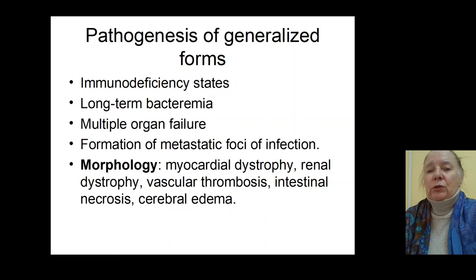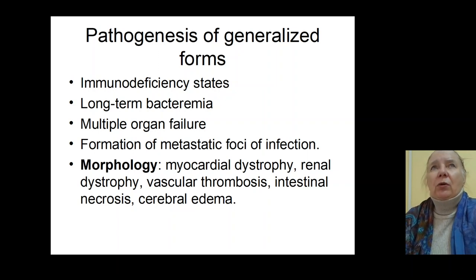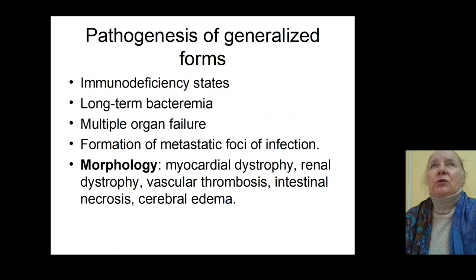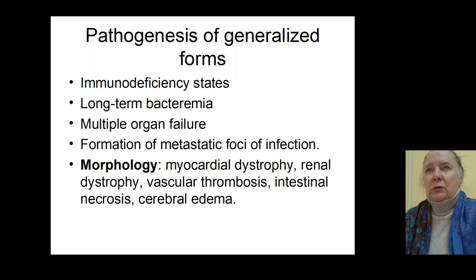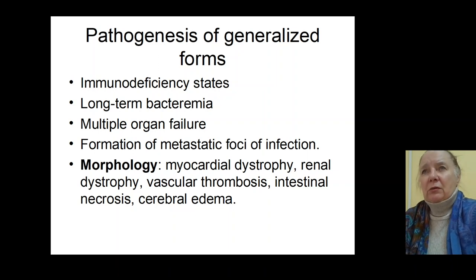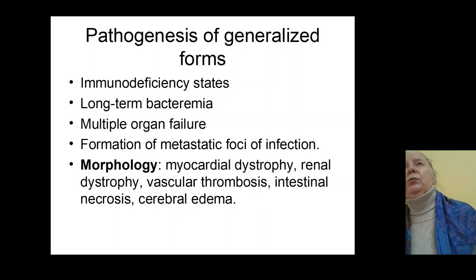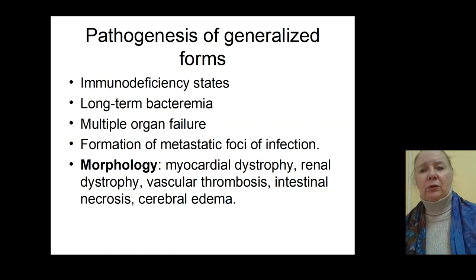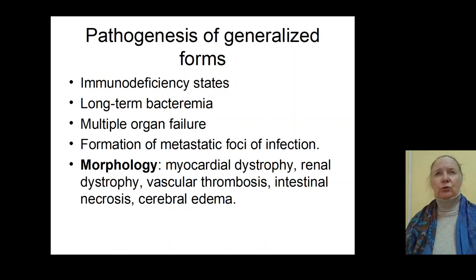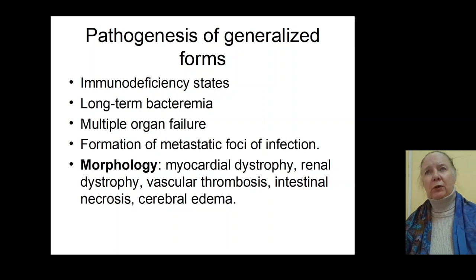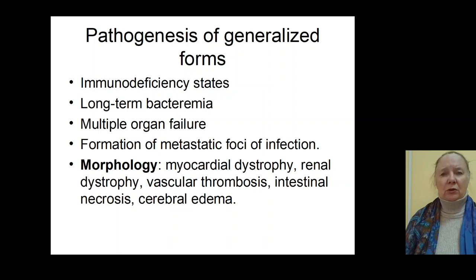Sometimes in immunodeficiency patients, patients with severe concomitant disease, or patients on immunosuppressive therapy — for example, X-ray therapy — it causes the formation of generalized forms of infection. Weak immune response leads to formation of prolonged bacteremia, which causes generalization of infection, when bacteria penetrate to internal organs and form metastatic foci of infection. Sometimes infection granulomas form with penetration to parenchyma of internal organs and activation of leukocytes.